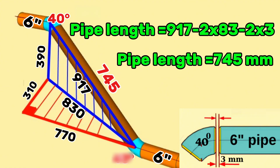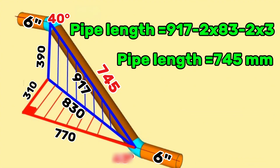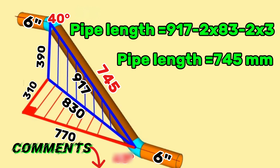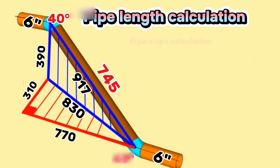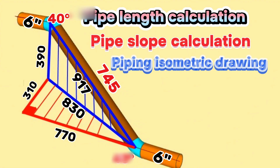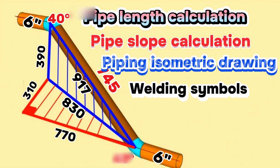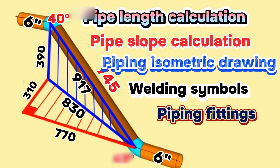By using this method, you can easily calculate lengths of pipe pieces in any pipeline. This tutorial video is finishing here. If you have any questions about the video, you can write comments in the comments section. You can watch videos about pipe length calculation, pipe slope calculation, piping isometric drawing, welding symbols, and pipe fittings by entering the links in the description below.